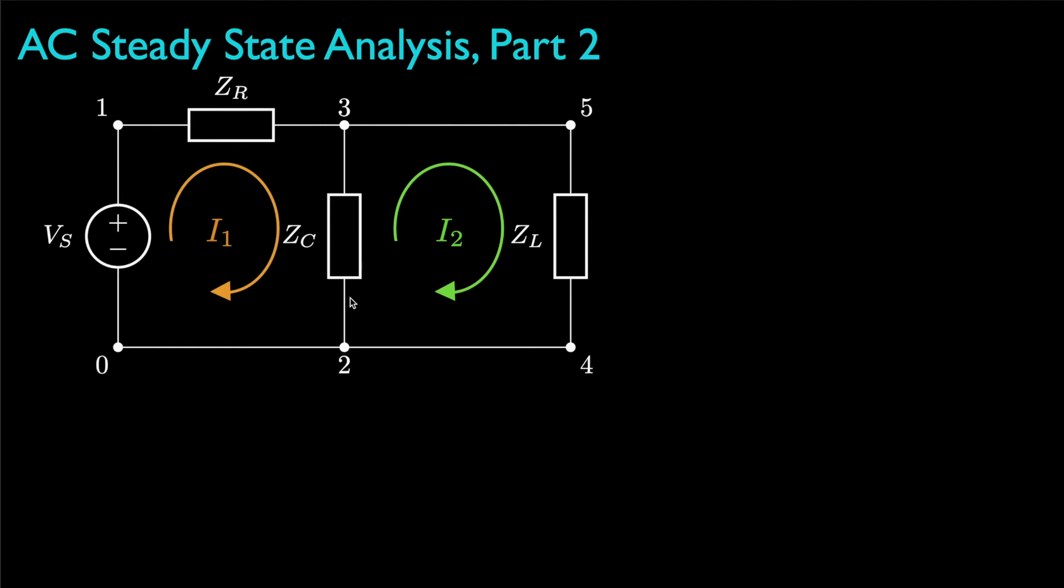Now, moving clockwise from node 0 in the first loop, adding up all of the voltage drops, we get negative Vs plus I1 times Zr plus I1 minus I2 times Zc, and that gets us back and we set all of that equal to 0.